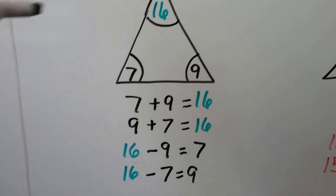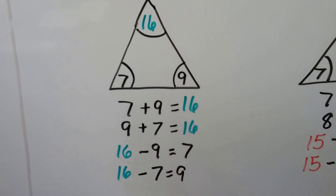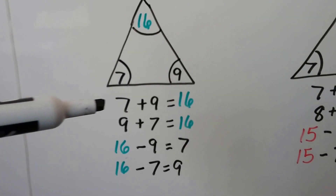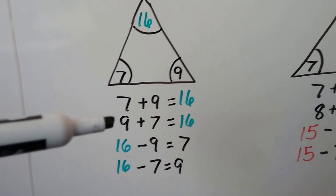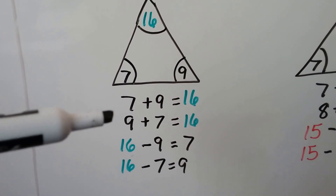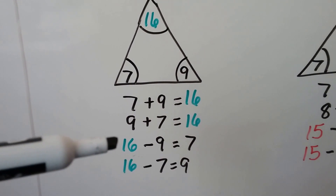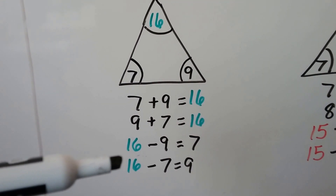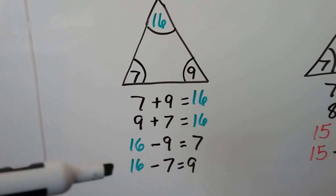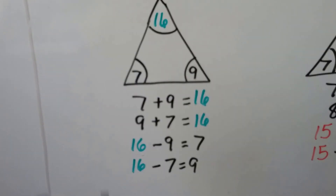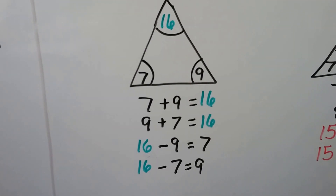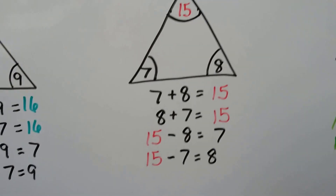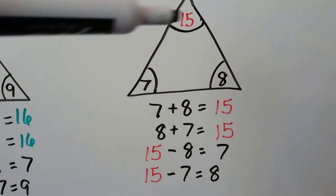Look at this one — we have a 16 on top, so that's our sum or our minuend. We've got a 7 and a 9: 7 plus 9 equals 16, or 9 plus 7 equals 16, and then 16 minus 9 equals 7, and 16 minus 7 equals 9. See the family they created — two addition and two subtraction sentences.